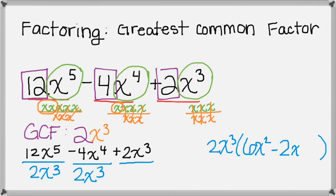And then finally my last term, 2x cubed divided by 2x cubed. Well 2 divided by 2 is just a 1. x cubed divided by x cubed is 1. So we have plus 1.